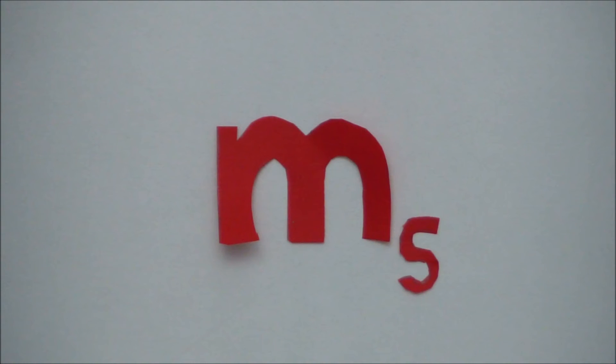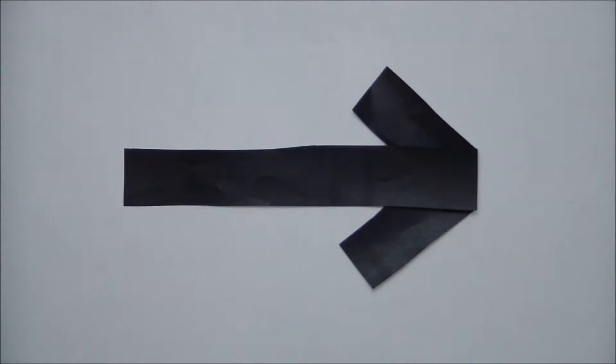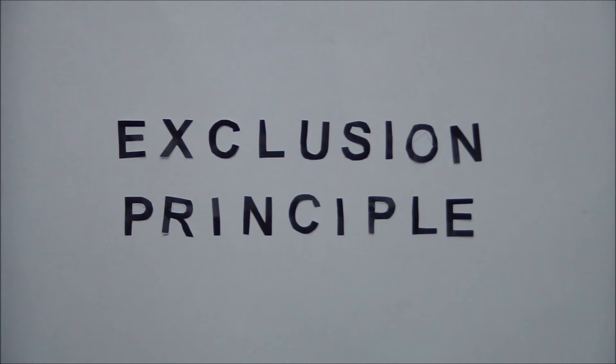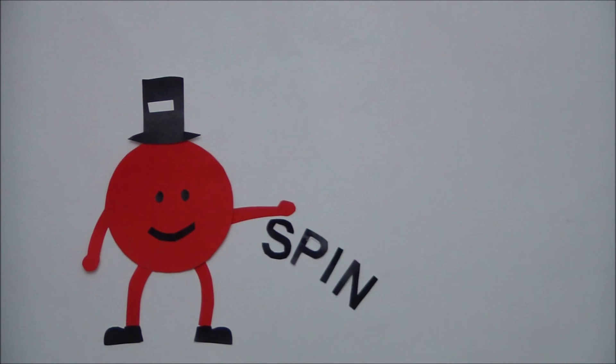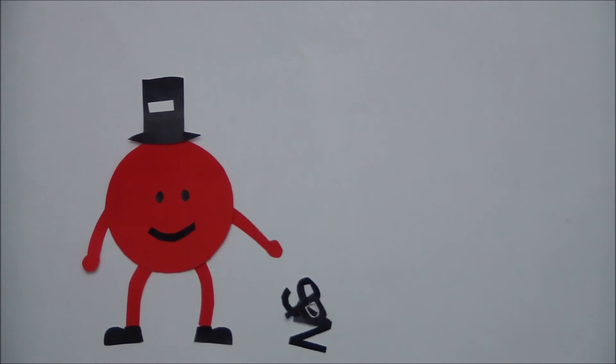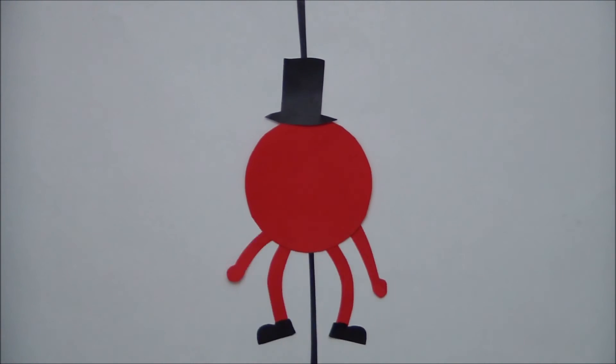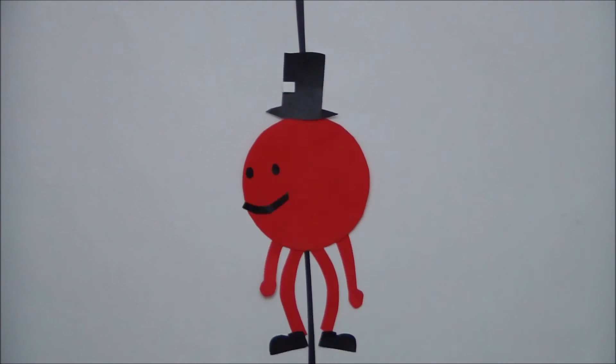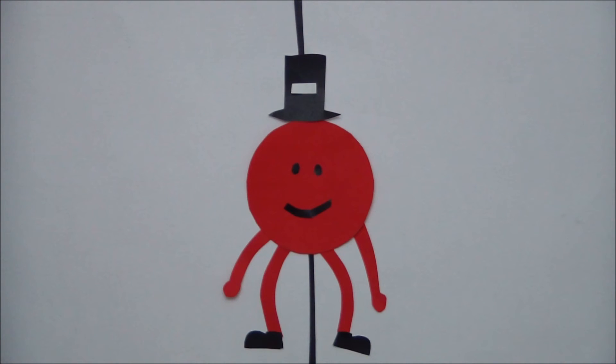It is this fourth quantum number, spin, which explains why the exclusion principle stands. Spin is a magnetic property of an electron, so-called because the electron's behavior is like that of a hypothetical electron spinning about its own axis. But in reality the electron probably does not actually spin, and may not even have an axis.